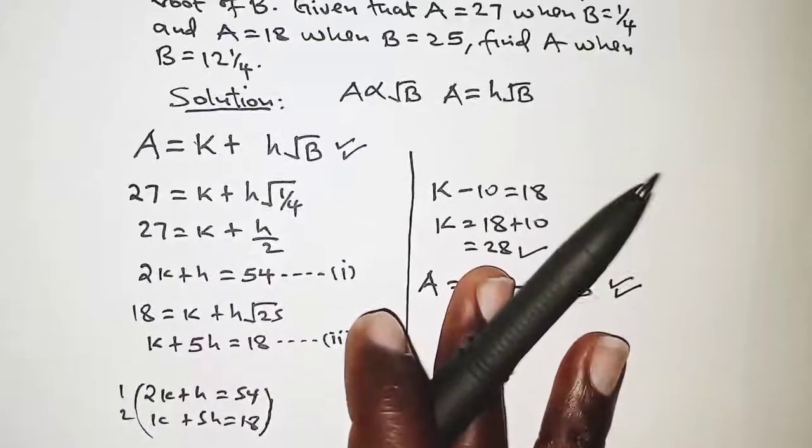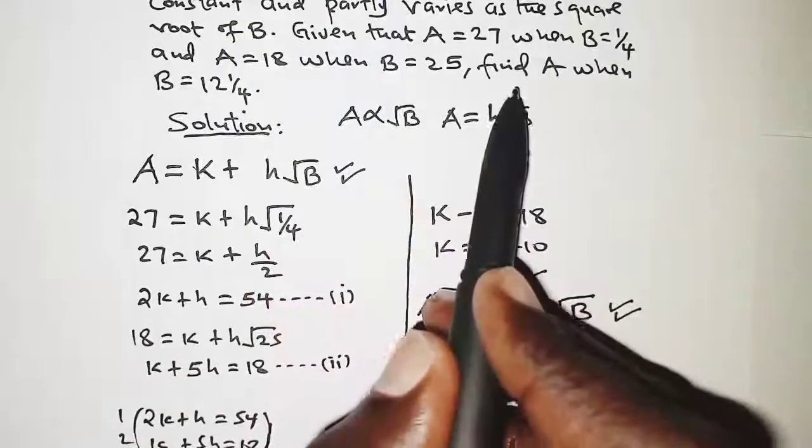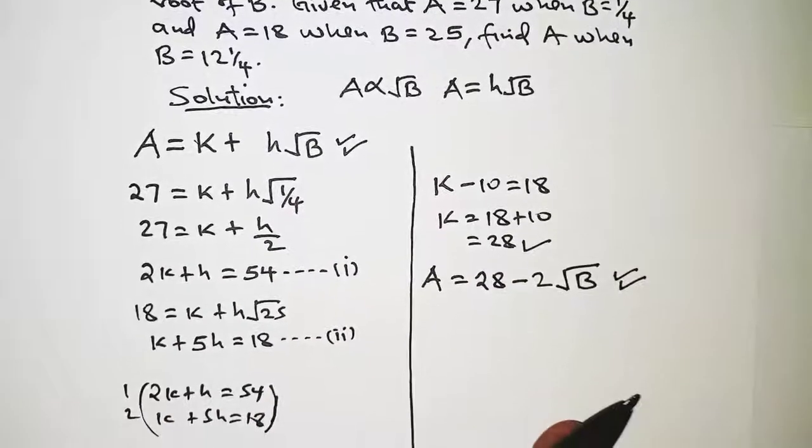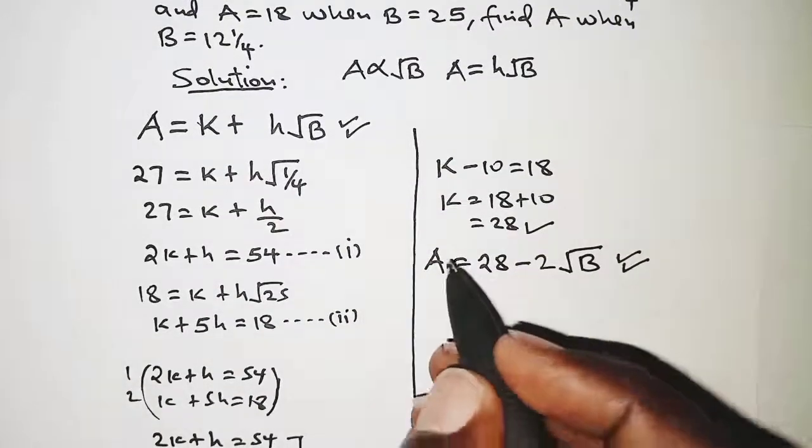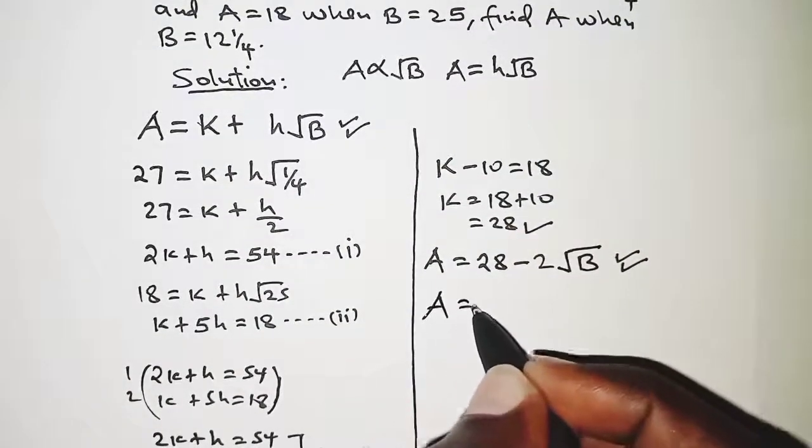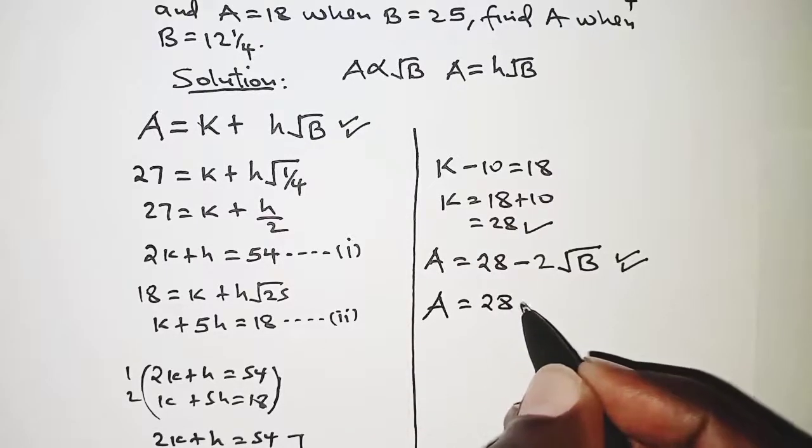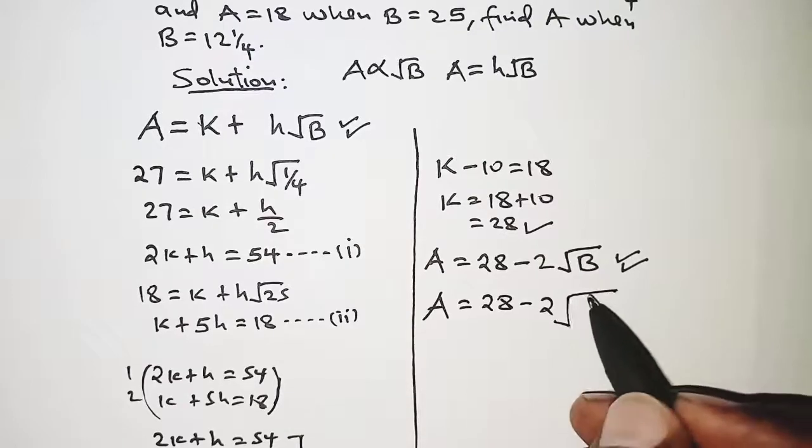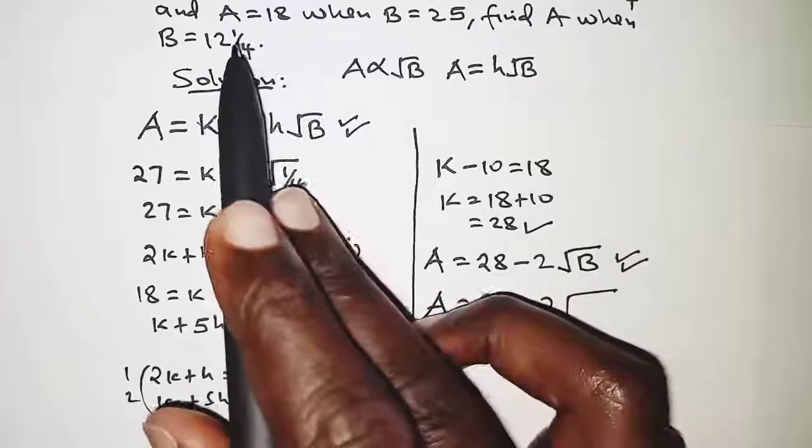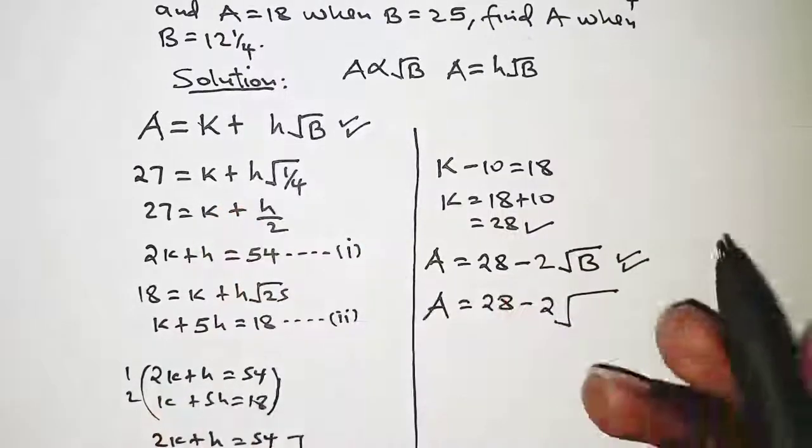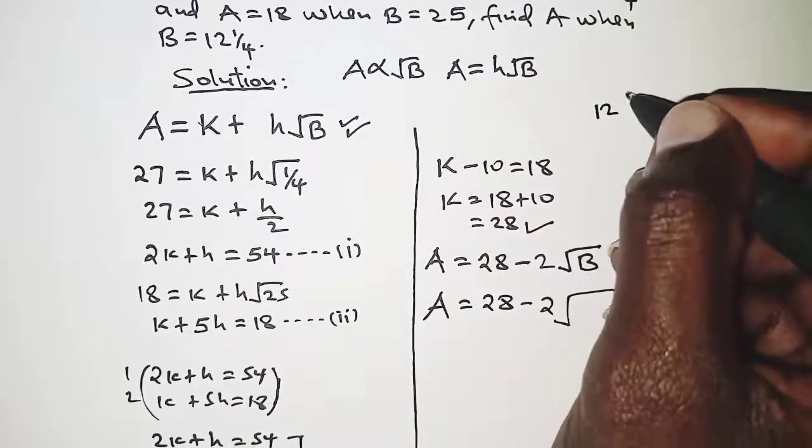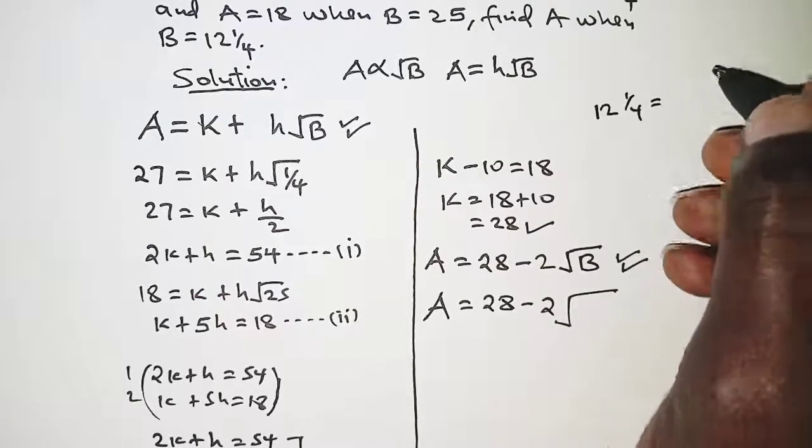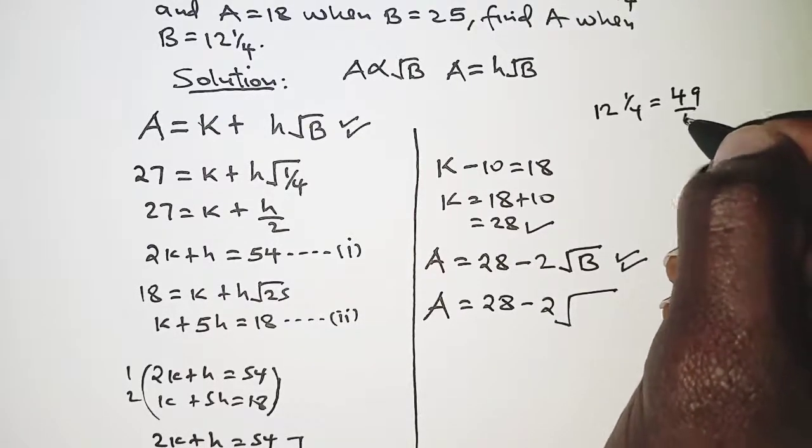Applying this law we are going to get the value of A. In the question you are told find A when B is 12 and a quarter. A will be 28 minus twice root B, and B we have been told is 12 and a quarter.